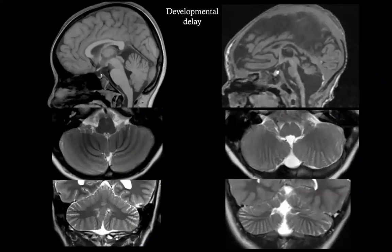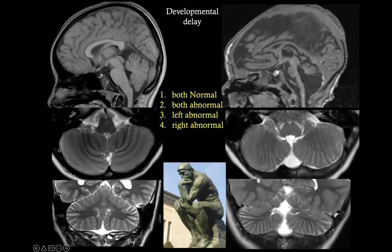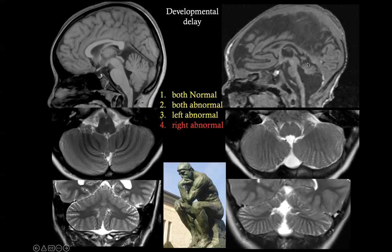Let's start with two cases, one on the left and another on the right. The posterior fossa in these two patients looks very different. What is normal? What is abnormal? Are both normal, both abnormal, or one normal and one abnormal? Most of you will easily guess that the normal one is on the left and the right is abnormal. But what are the indicators of normal anatomy on MRI?